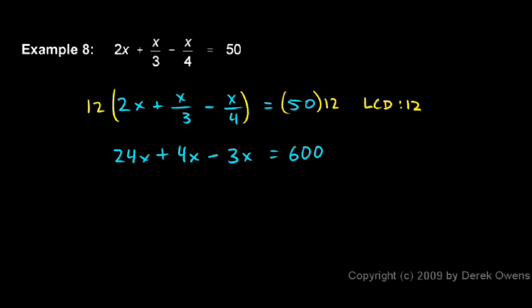Now on the left, I have 24x plus 4x minus 3x. Those are all x terms, and they combine to give me 25x equals 600. And then it's pretty easy to divide both sides by 25, and 600 divided by 25 comes out to 24, so x equals 24.